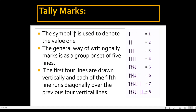For value 1, we give 1 vertical line. For value 2, we give 2 vertical lines. For value 3, we give 3 vertical lines. For value 4, we give 4 vertical lines. For value 5, we give 4 vertical lines and 1 diagonal line going across them. For value 6, we give one set of 5 lines and 1 extra vertical line. For value 7, we give a set of 5 lines and 2 vertical lines. For value 8, we give a set of 5 lines and 3 extra vertical lines. Like this, we can give tally marks for any value.